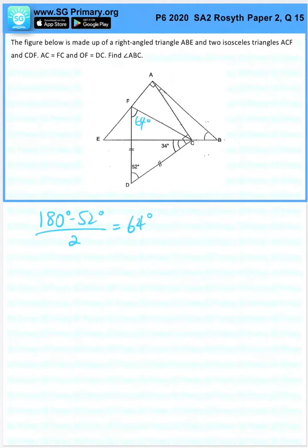FCA, which is this portion here, is 90 degrees minus 64, which is 26 degrees.